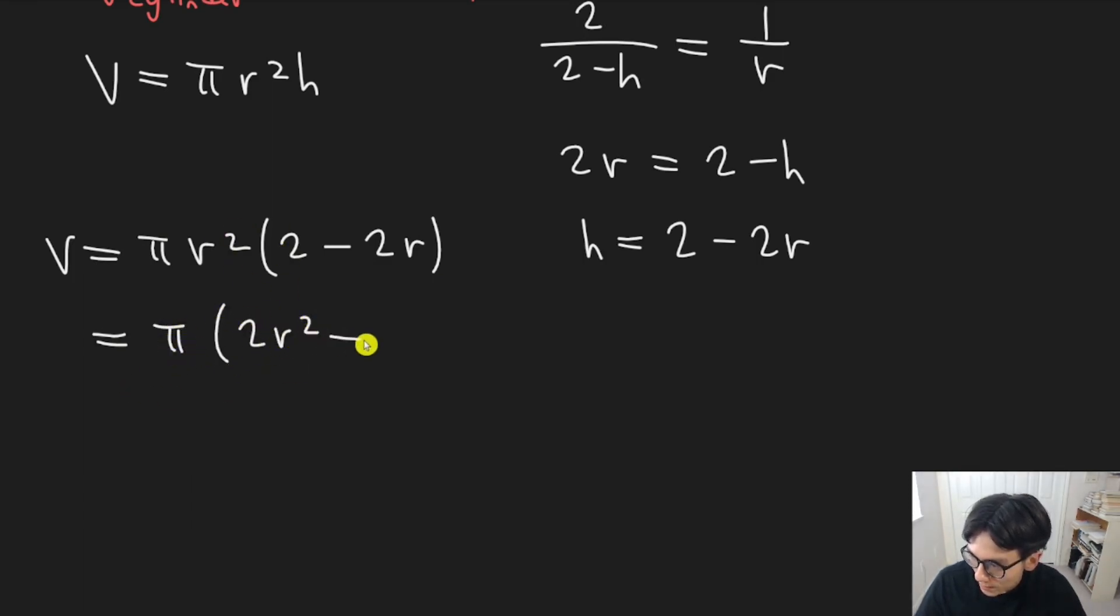Now, before we do that, we're going to simplify things a bit by multiplying the r squared in. So if I do that, I get two r squared minus two r cubed. You could also multiply the pi in, but pi is just a constant. And so we can just leave it out front. We take the derivative. It's no big deal.